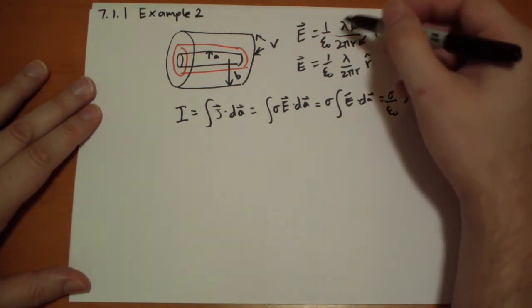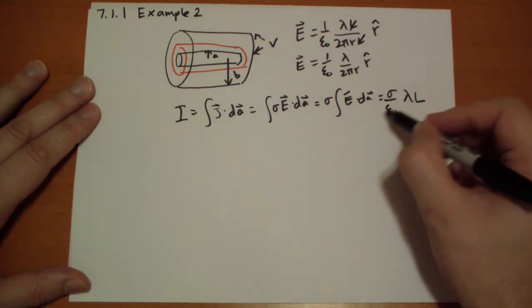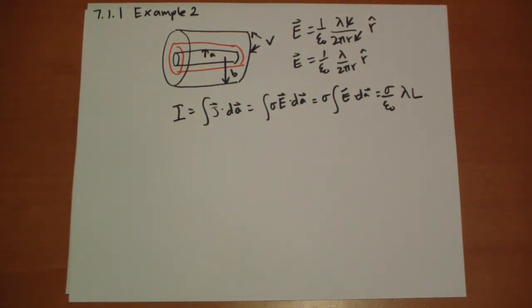We use Gauss's law to calculate this. We use Gauss's law to bypass that integral there. Isn't that neat? We don't have to solve integrals when we can use Gauss's law.